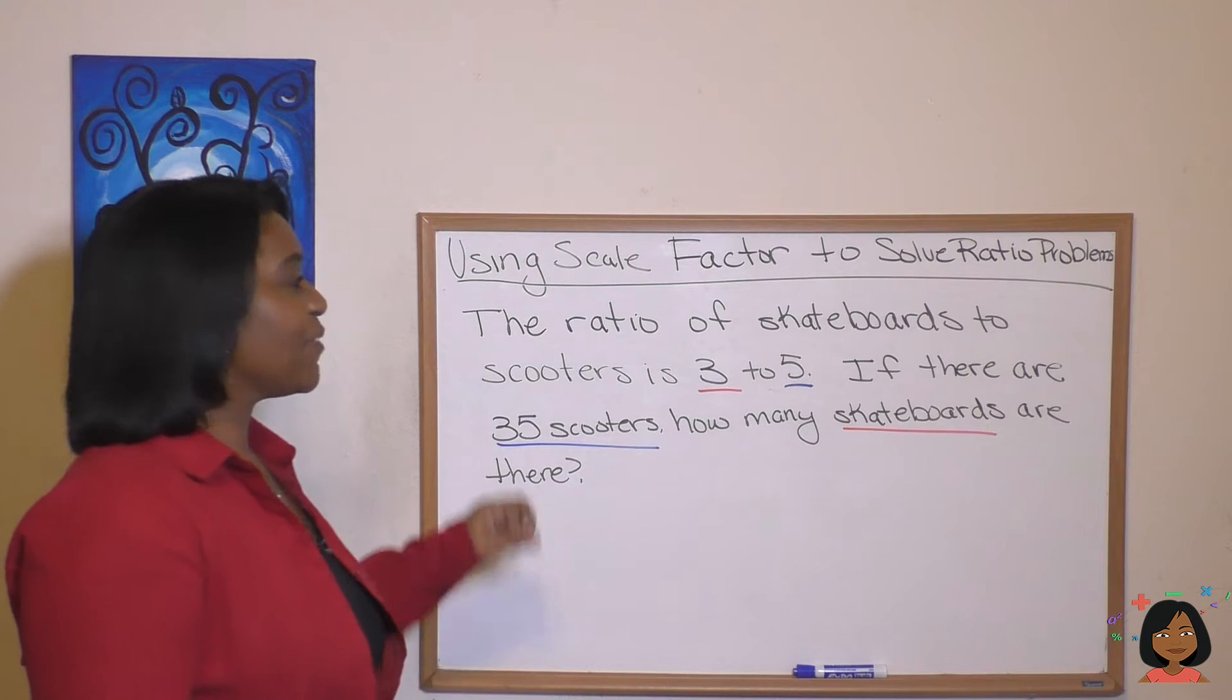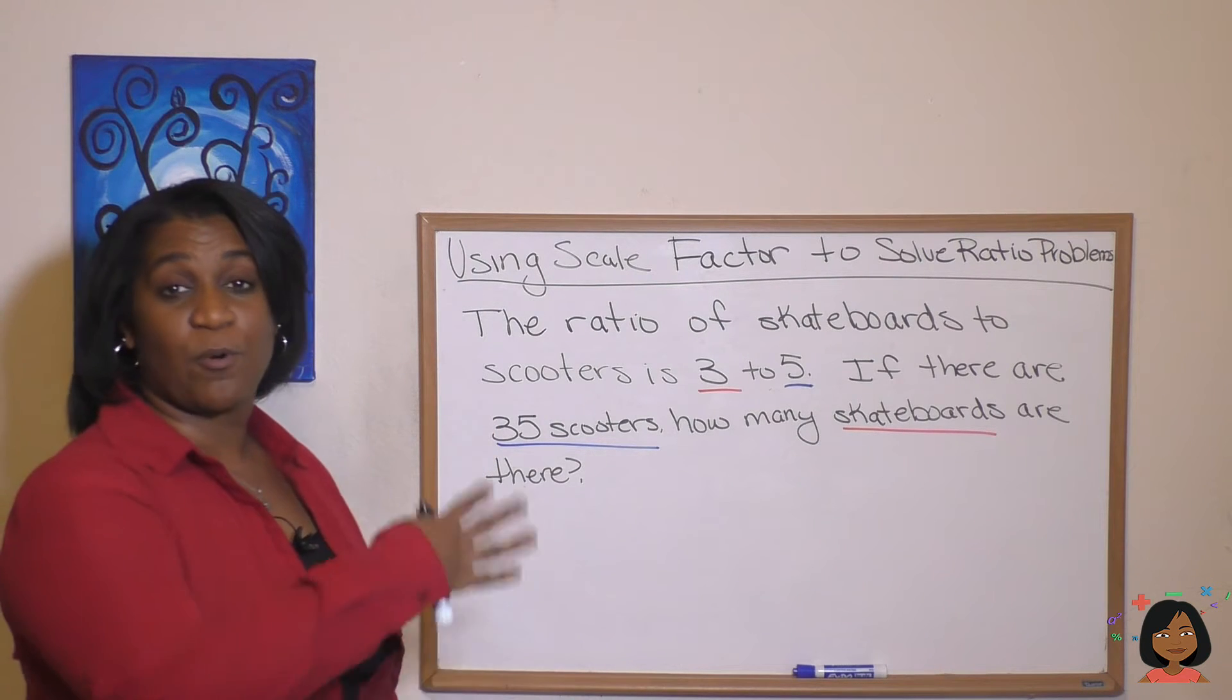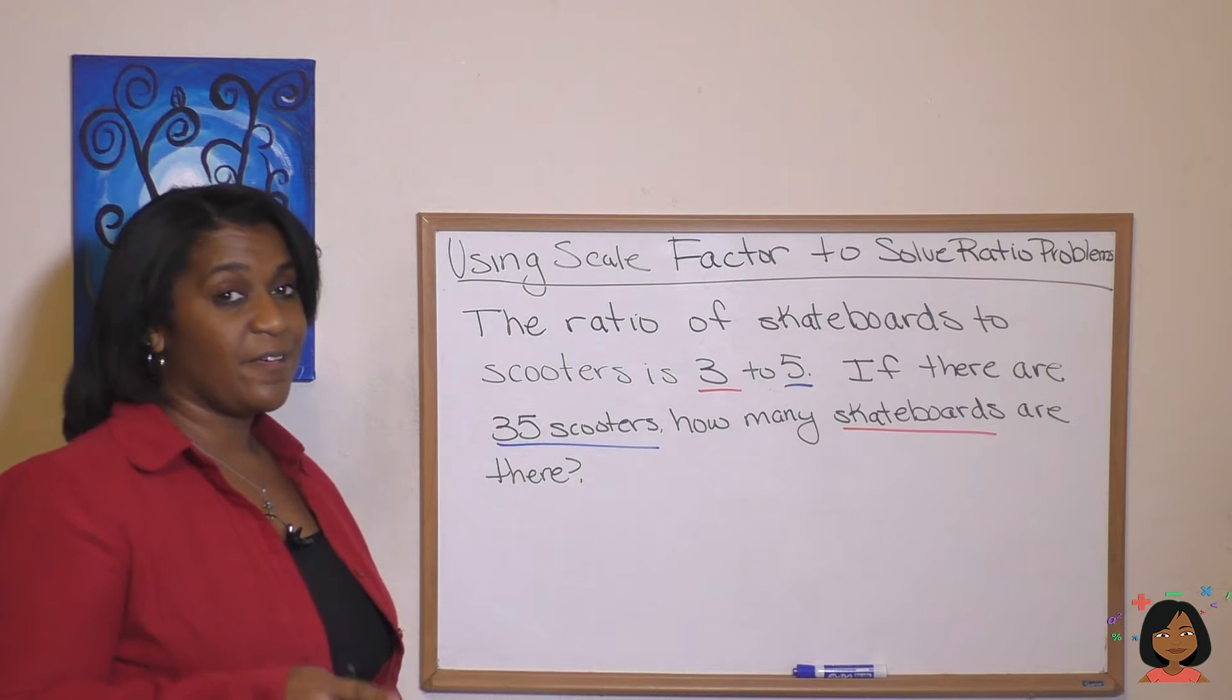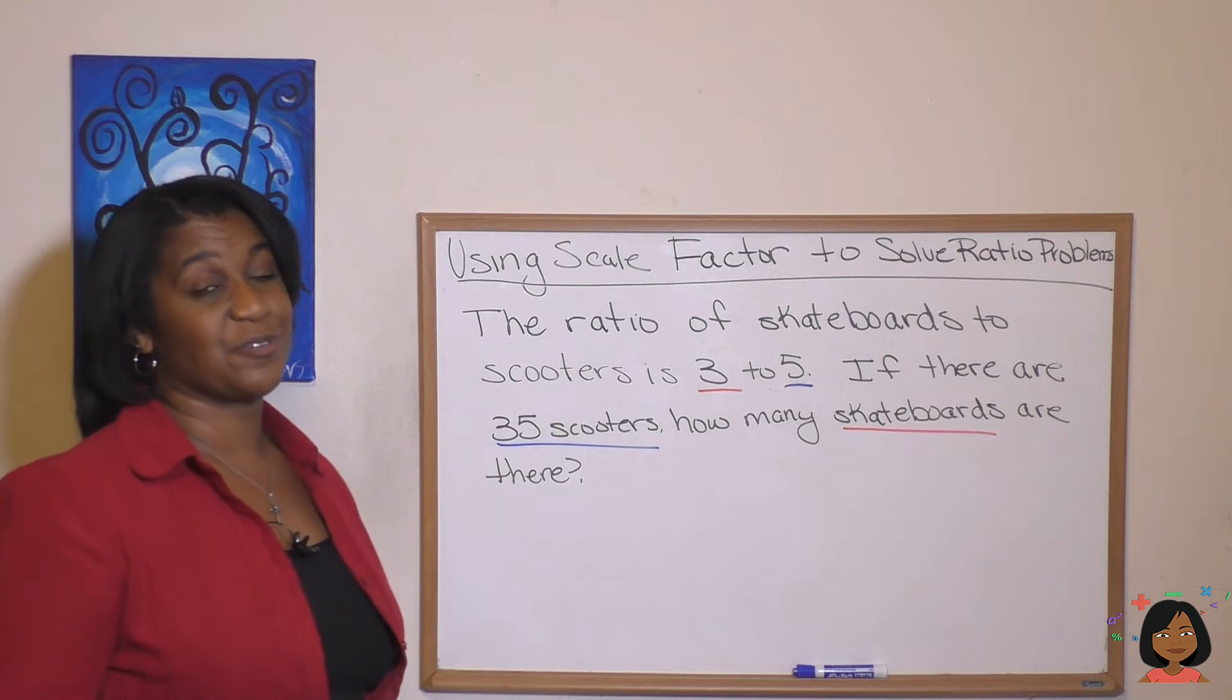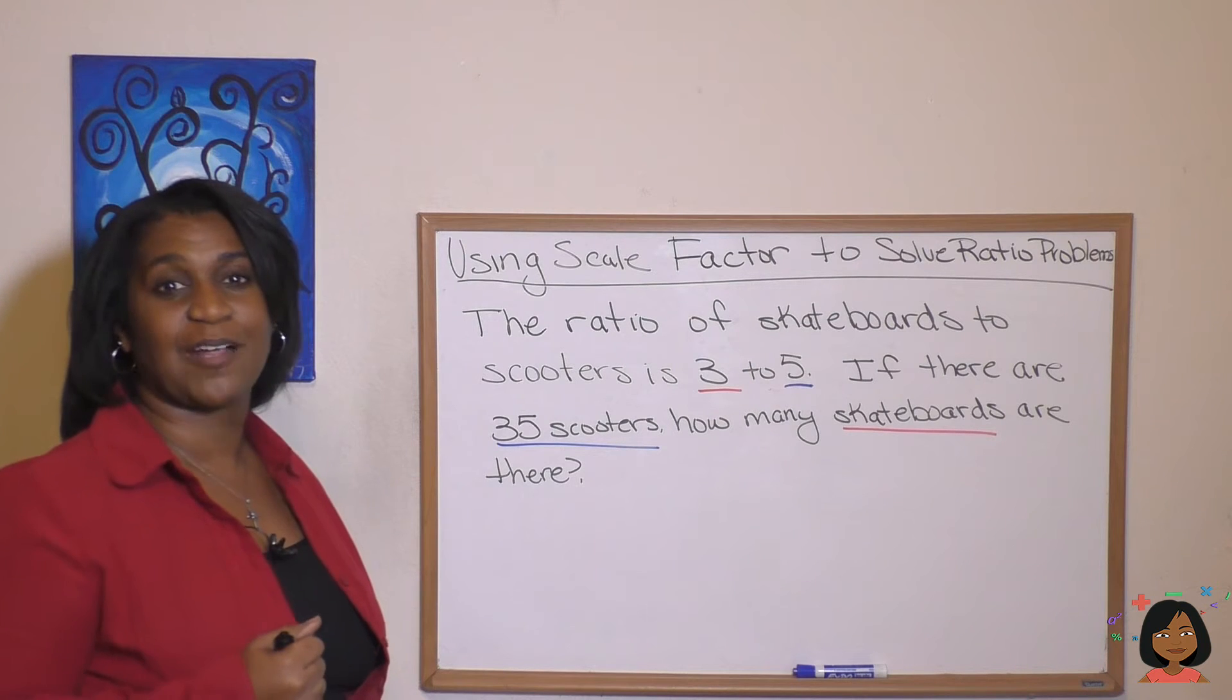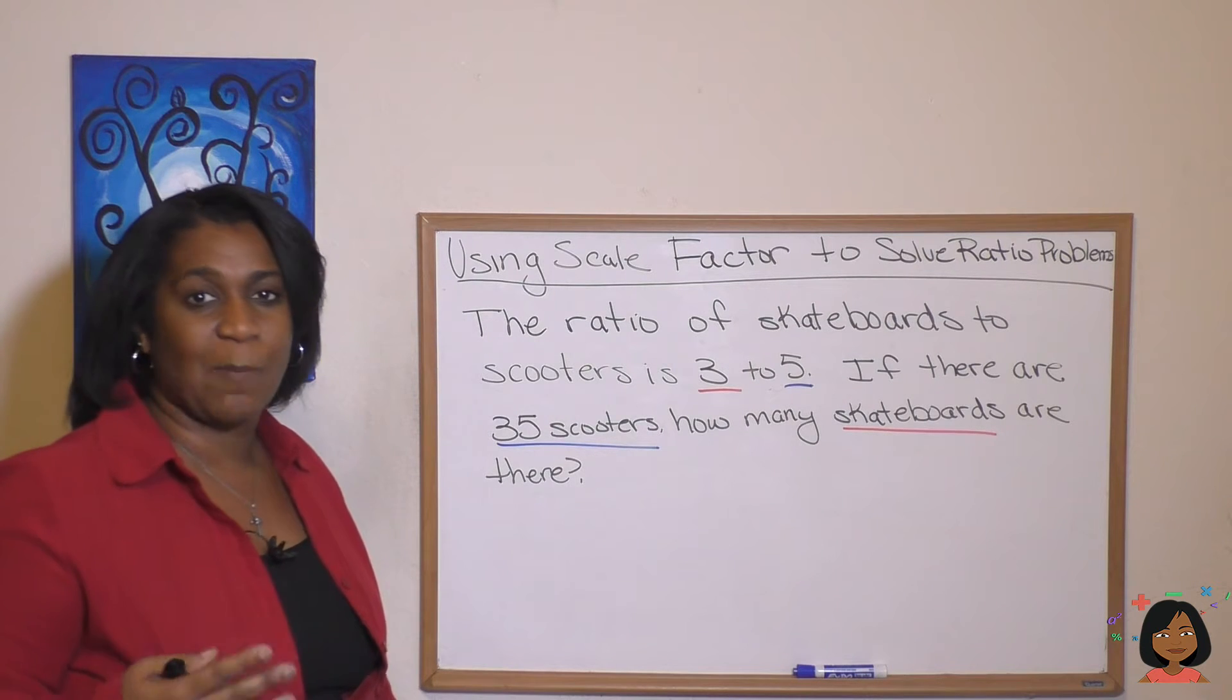Take a look at this example. The ratio of skateboards to scooters is three to five. If there are 35 scooters, how many skateboards are there? This is the kind of problem we're talking about. And what's the best way to go about solving it?